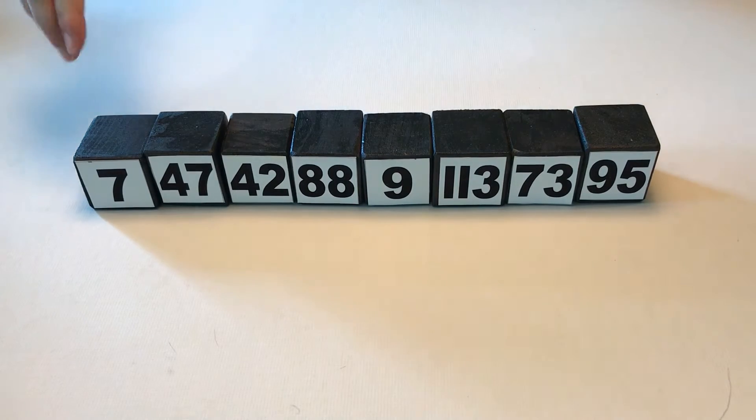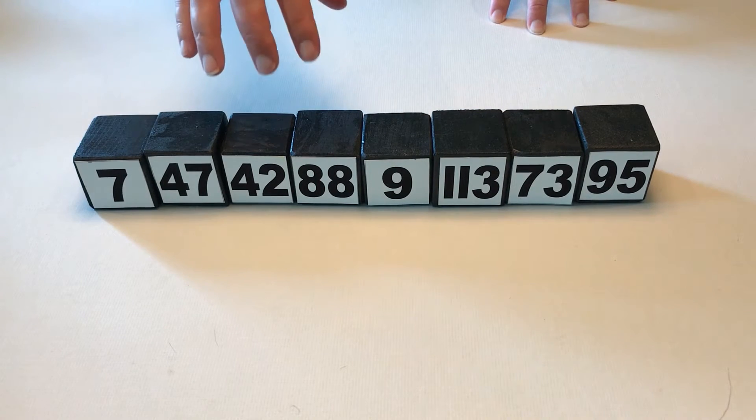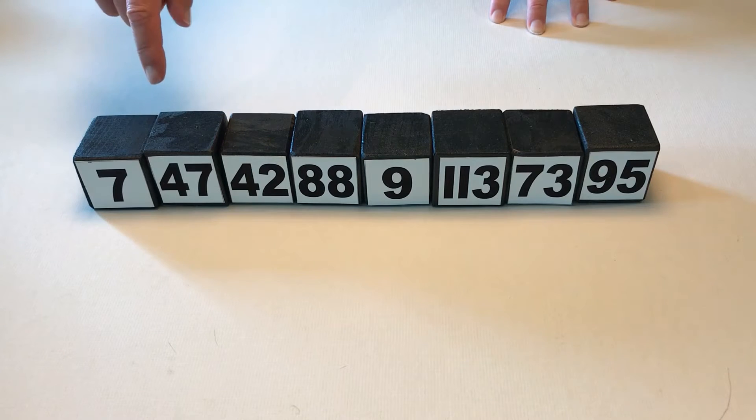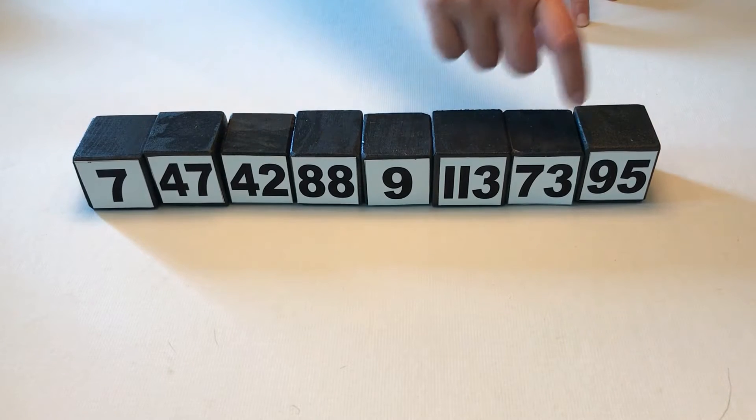So what we've got here are eight blocks with numbers on them. Our data set size, or letter n, would be eight. If they're stored in an array, then the elements would be zero, one, two, three, four, five, six, and seven.